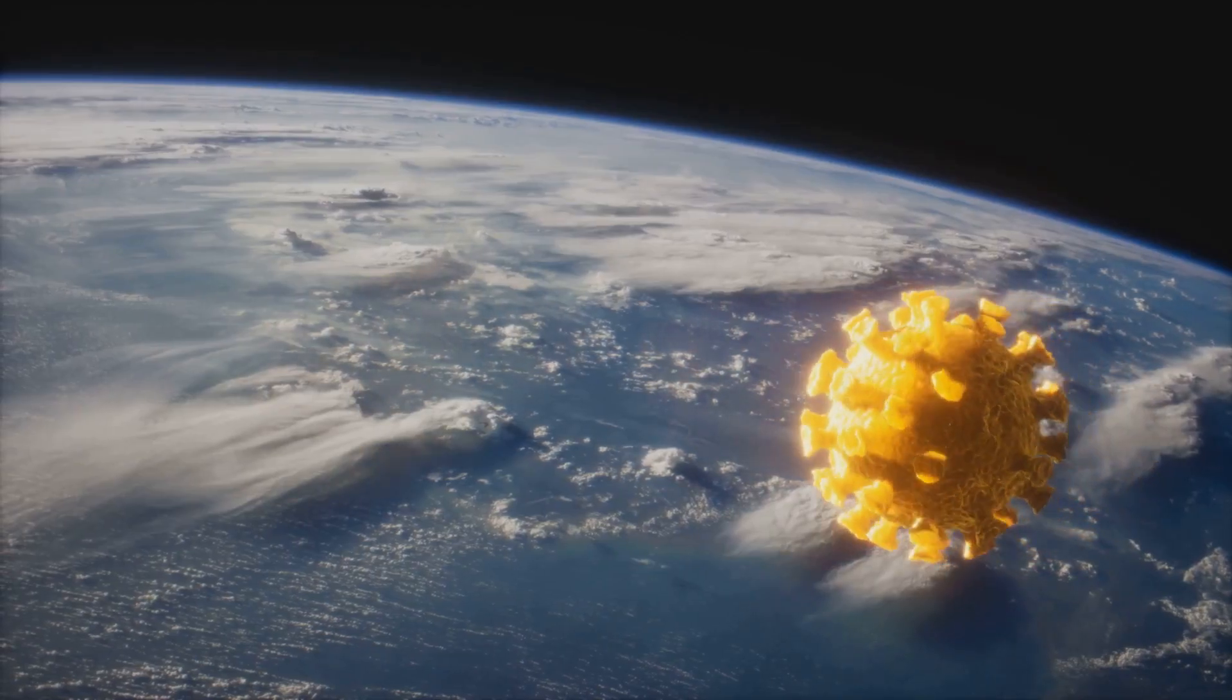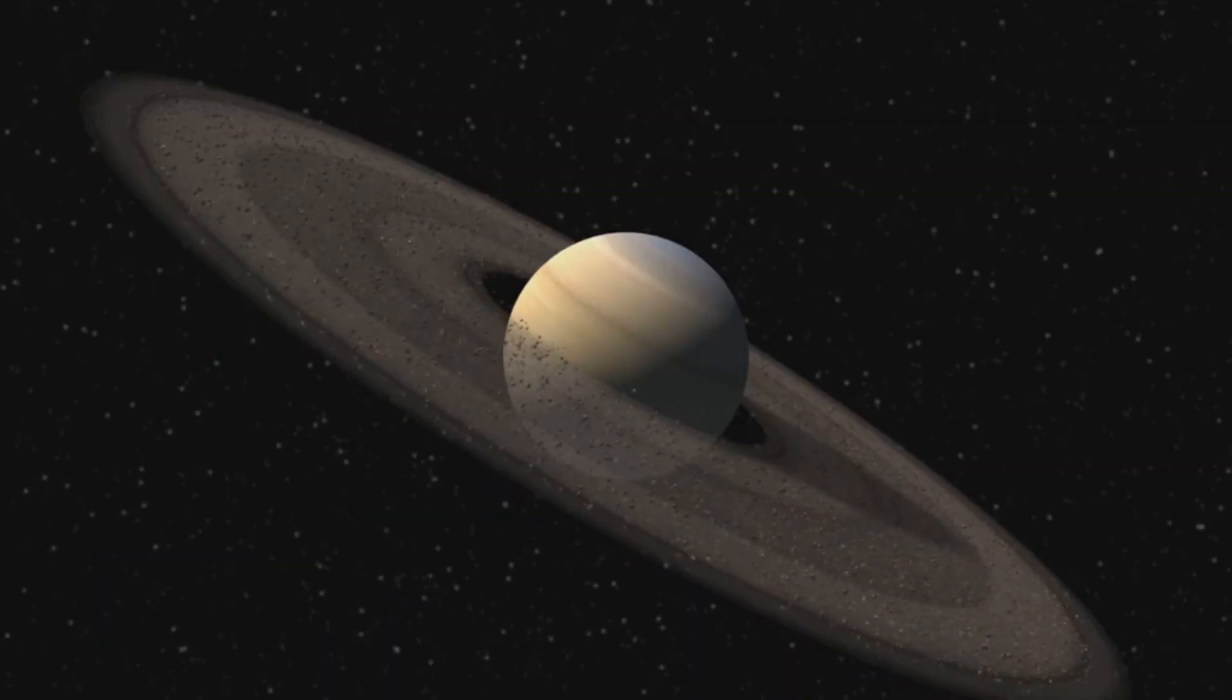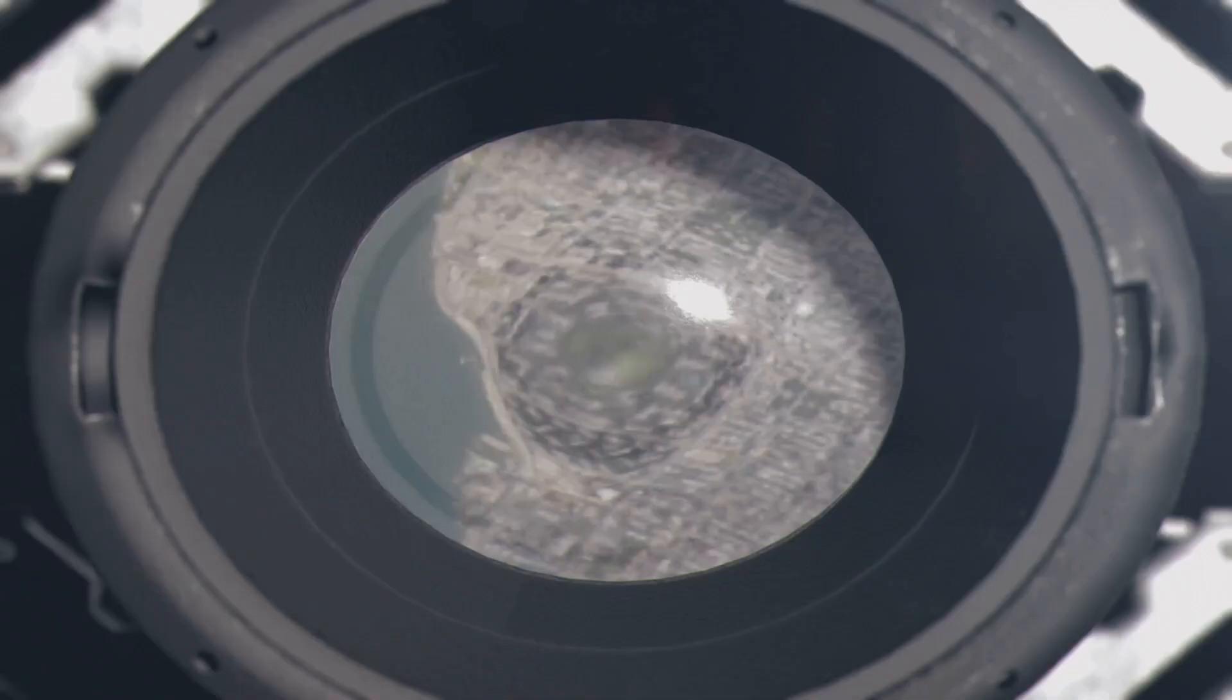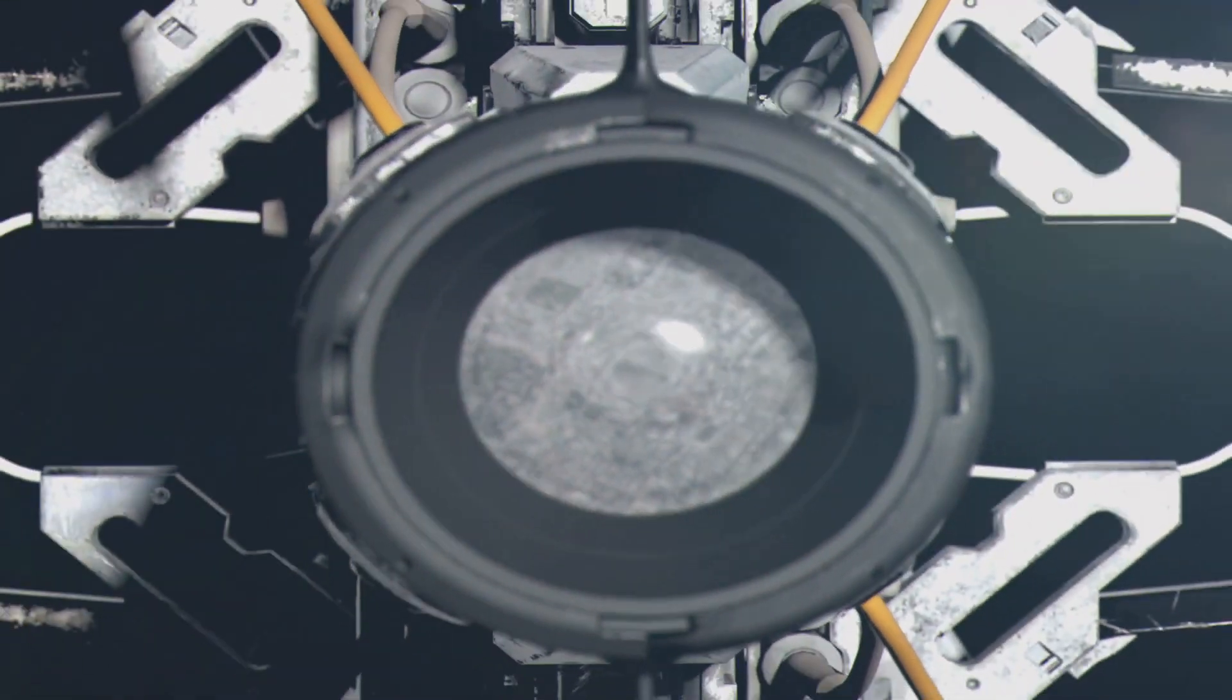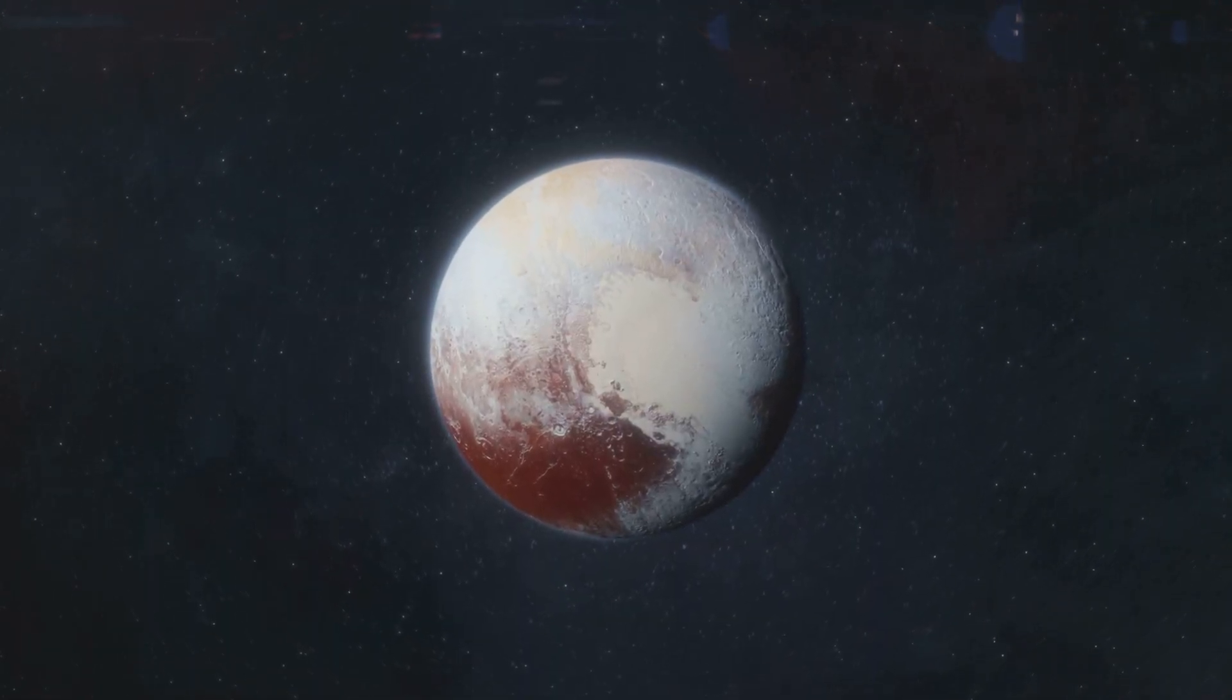Let's look beyond Earth. Have you ever wondered how we power spacecraft that travel to distant planets like Jupiter and Saturn, or even Pluto? Solar panels work great for missions close to the sun, but as you travel farther out, sunlight becomes too faint to generate enough electricity.